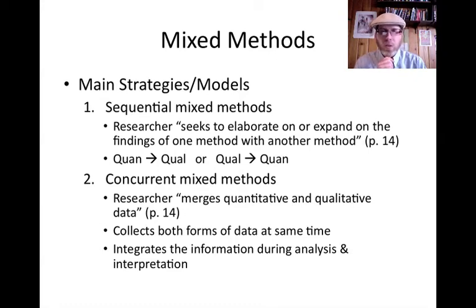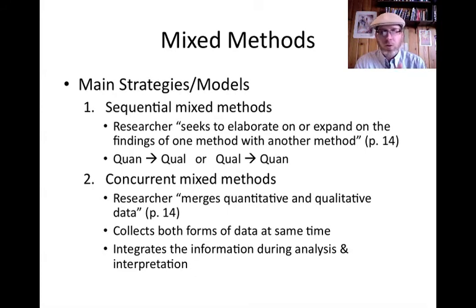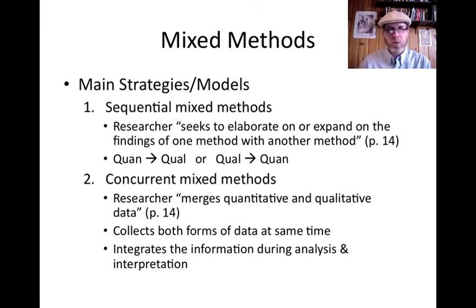Then there's also concurrent mixed methods, where the researcher merges quantitative and qualitative data. You collect those forms of data together. You might analyze them together or separately, depending on what you're doing. You integrate that information during the analysis and the interpretation. So in sequential, one comes first and then the next; in concurrent, you're collecting both sets of data together.